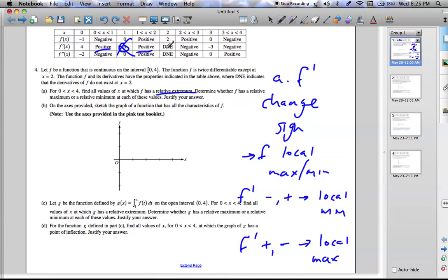At x equals 2, it goes from positive, does not exist, to negative. So it does change sign, we like that. There's no 0 there. So at x equals 2, f' goes from positive to negative. And here, that means we have a local max.